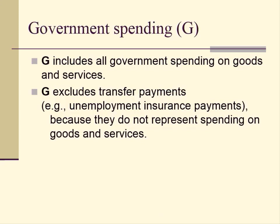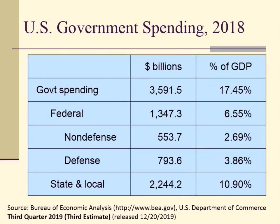The third expenditure component is government spending, G. G includes all government spending on goods and services; however, G excludes transfer payments such as unemployment insurance, because those do not represent spending on goods and services directly — recipients use those funds for consumption, and including them would cause double counting. US government spending in 2018 was roughly $3.5915 trillion, approximately 17.45% of GDP — roughly one-sixth of GDP.